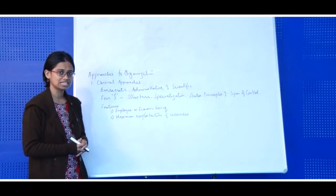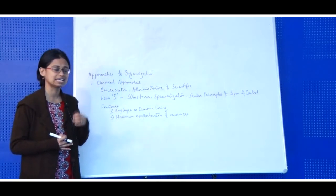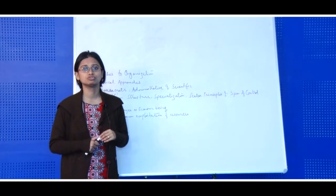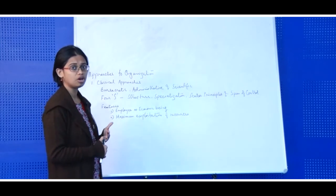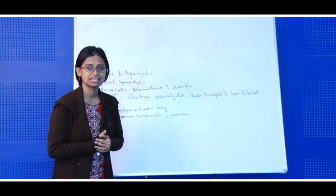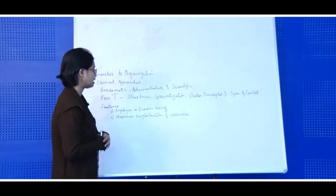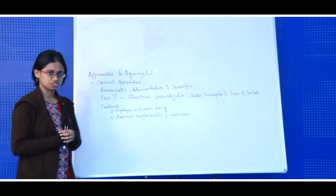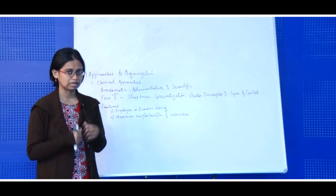These are all the main features of modern organization which are in practice till date. That ensures again that classical approaches are not old or obsolete — they are more established, more practiced, and more widely spread as an organizational system found in modern organizational systems.